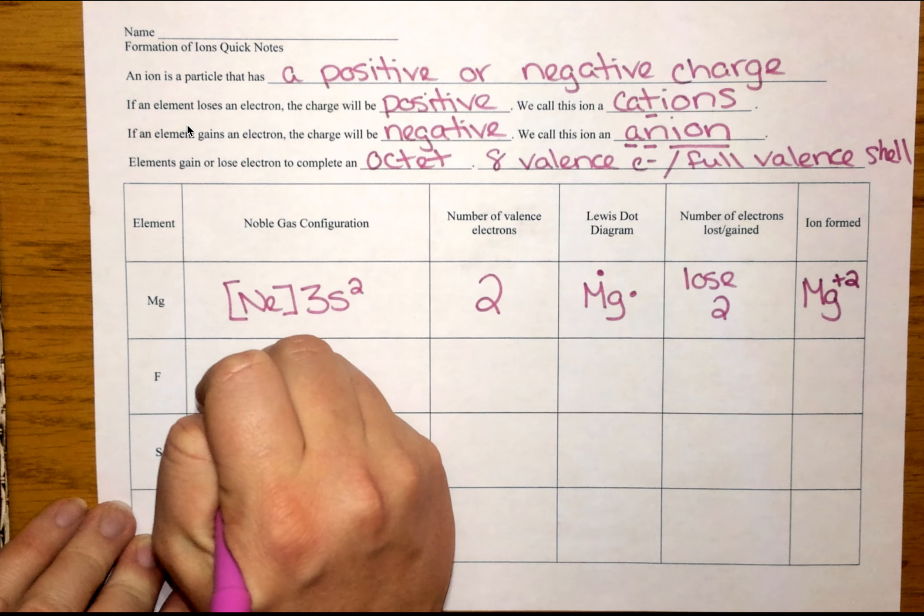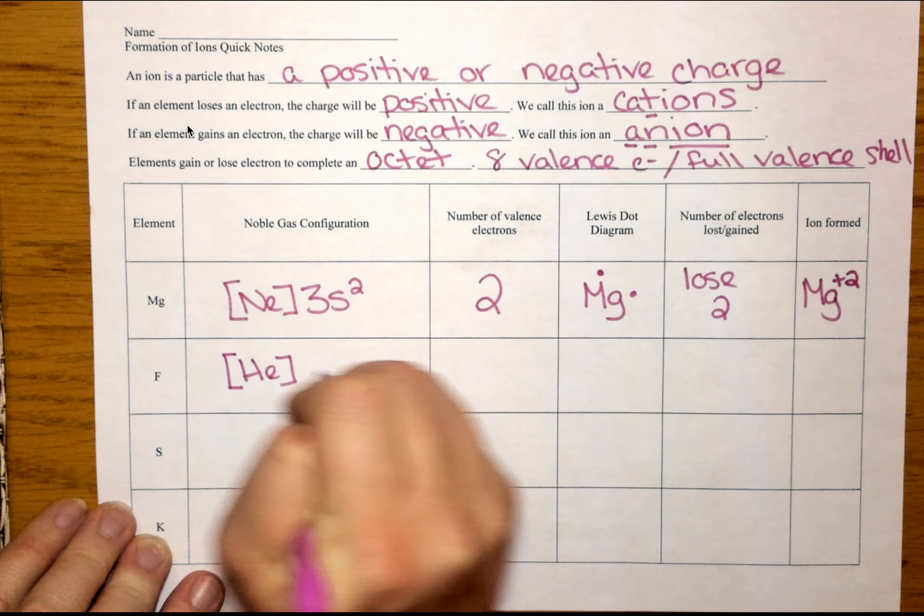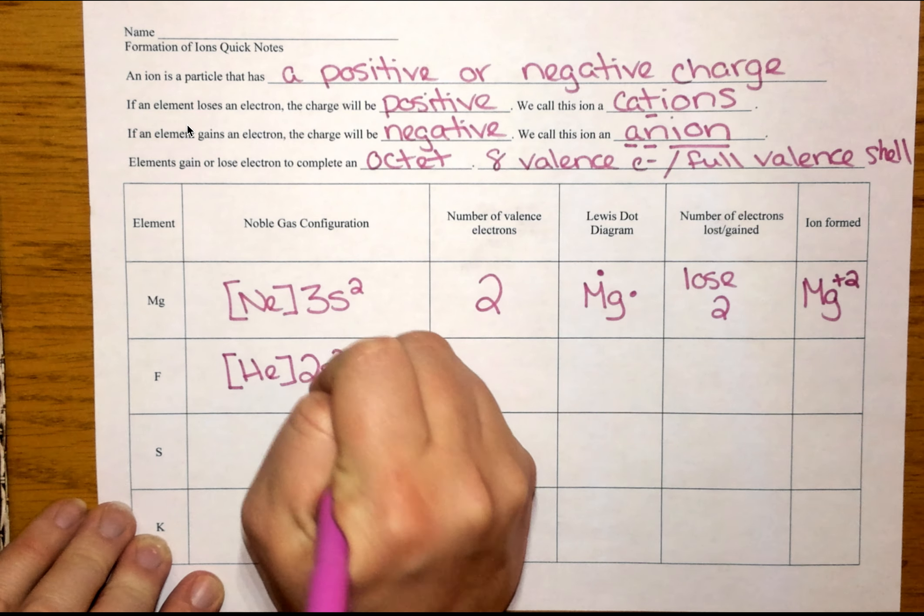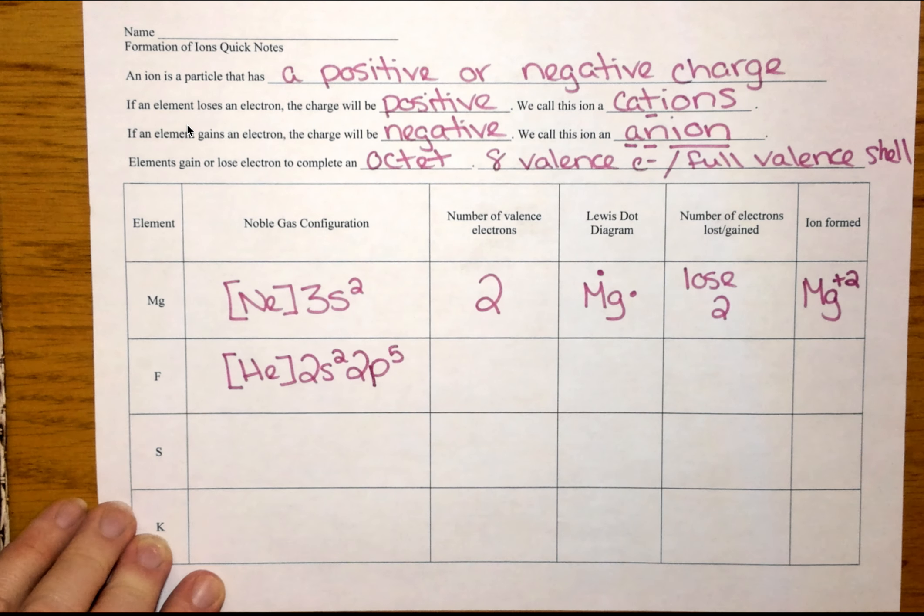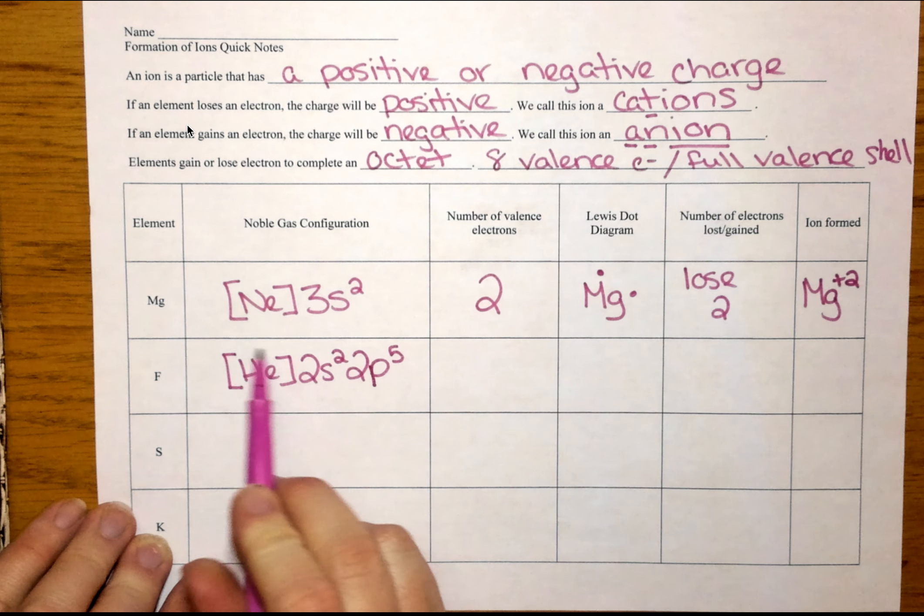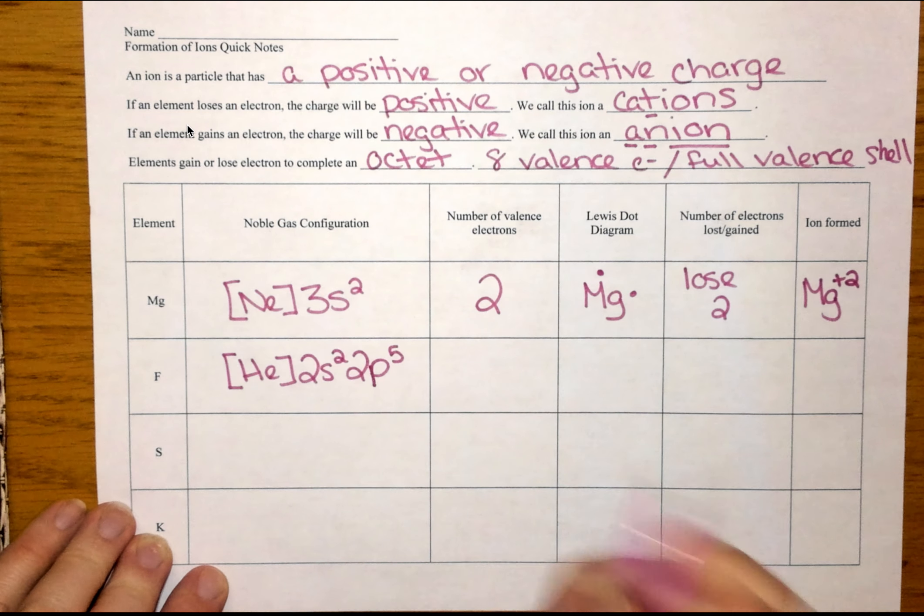All right, let's do another example. So fluorine. So fluorine's noble gas configuration is going to be helium 2S2 2P5. So outside of helium, I have seven valence electrons.